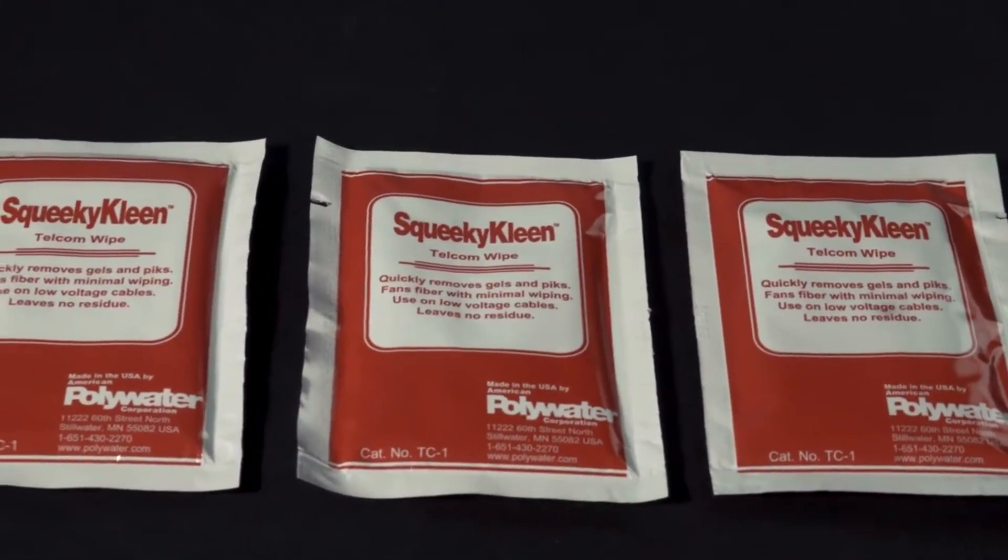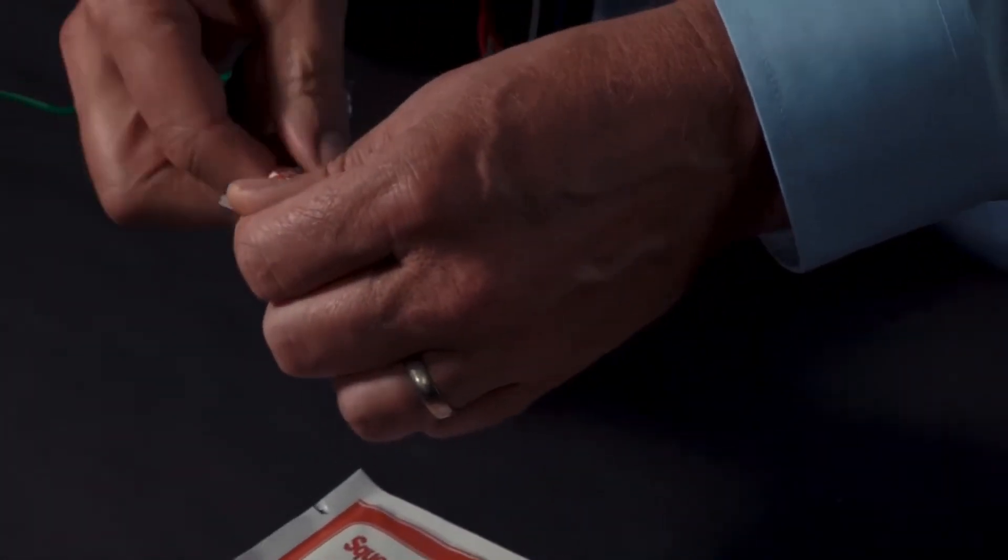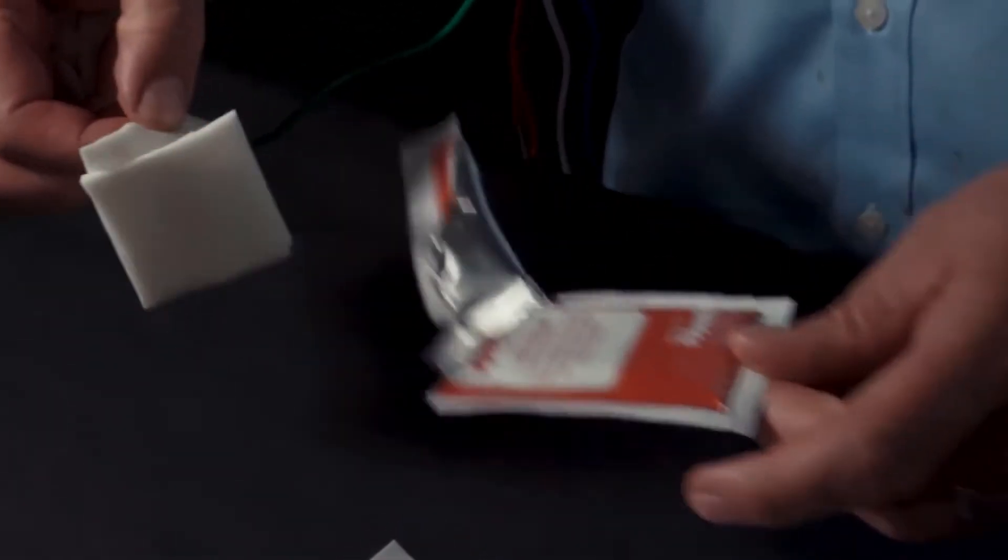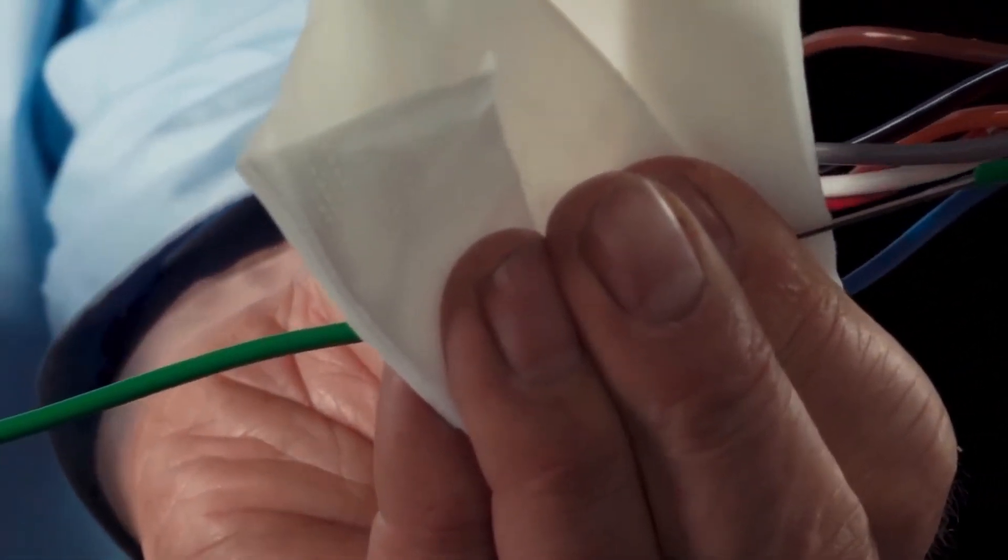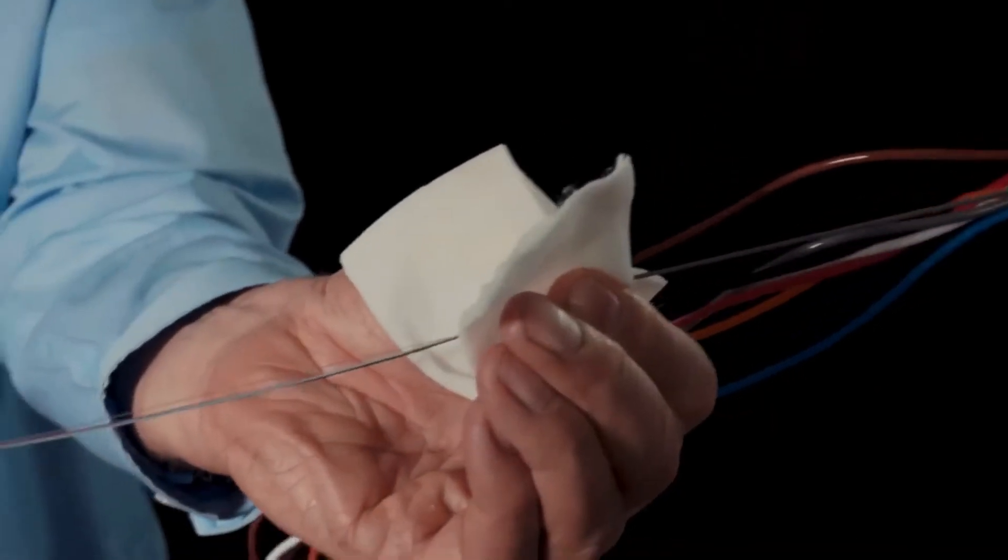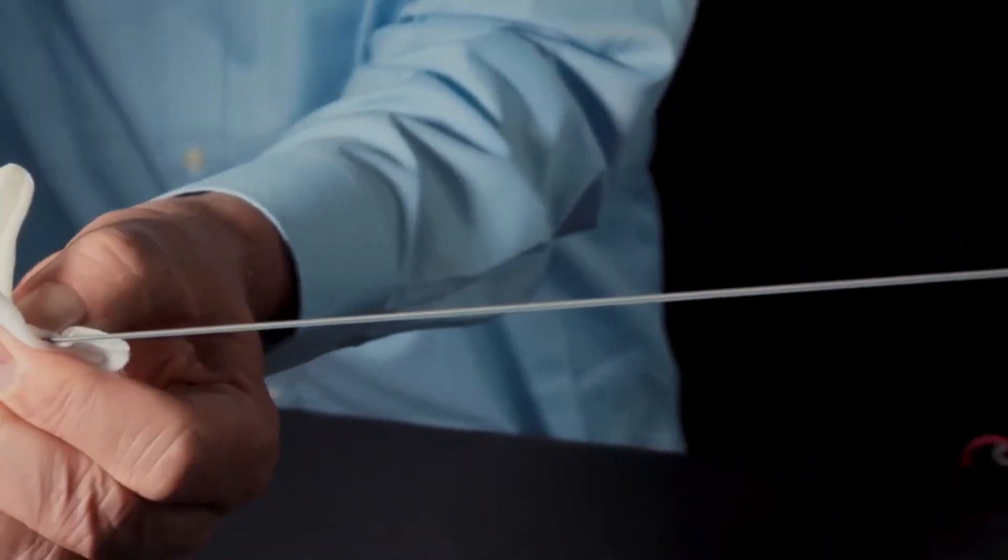SqueakyClean comes in a convenient pre-saturated wipe package with a durable non-linting towel. Combine the effective cleaning with a high-performance towel and the fiber prep is a snap. The strands are cleaned and will fan in just a few wipes.